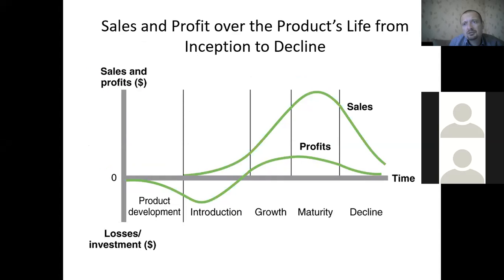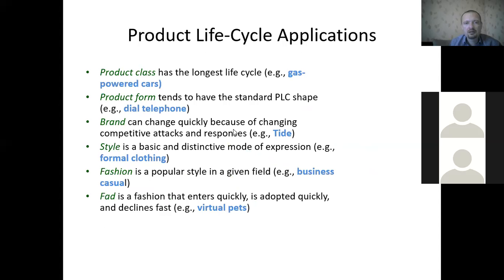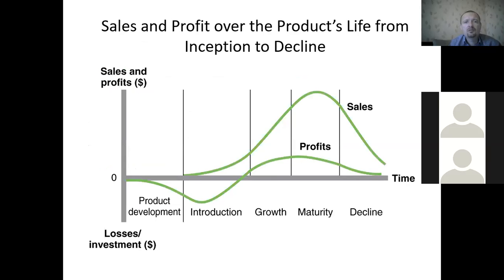Let's speak about every stage in a little more detail, because we need this information for our matrices. Speaking about the life cycle curve, we have to think not only about the product but about the type and form of the product. Sometimes this curve looks a little bit different. Generally it has the same structure — growth, a stable peak, and then declining — but sometimes there are variations.